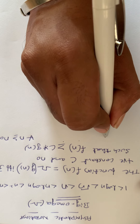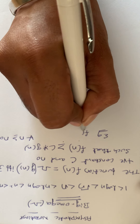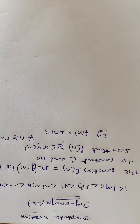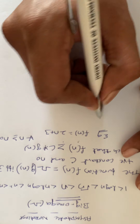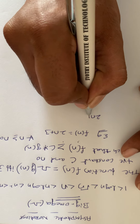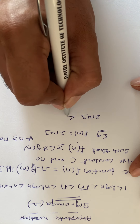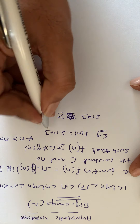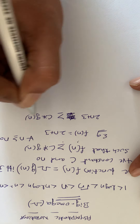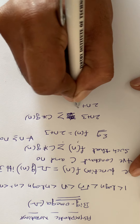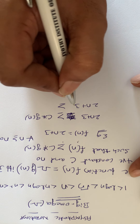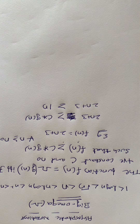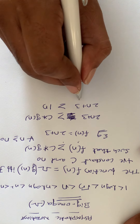I will explain one small example. Take f(n) = 2n + 3. Now, f(n) must satisfy f(n) ≥ c·g(n). So, 2n + 3 ≥ c·g(n). Assume c·g(n) = 1·n. Then 2n + 3 ≥ 1·n, which is true for n ≥ 1.